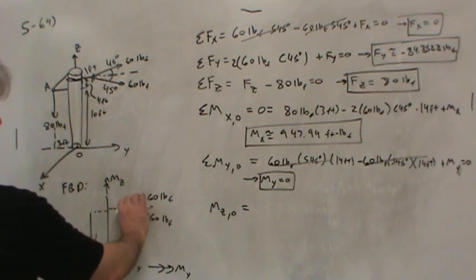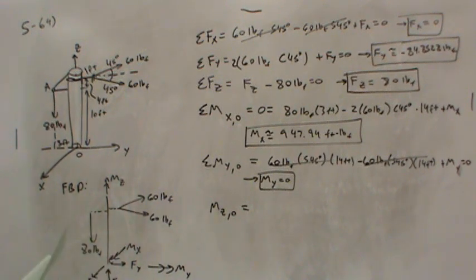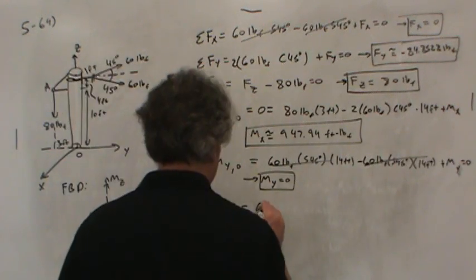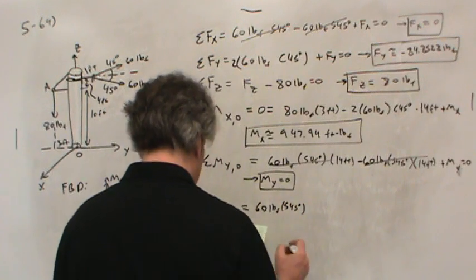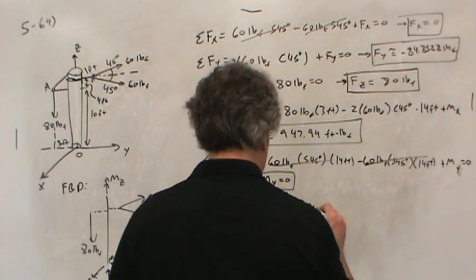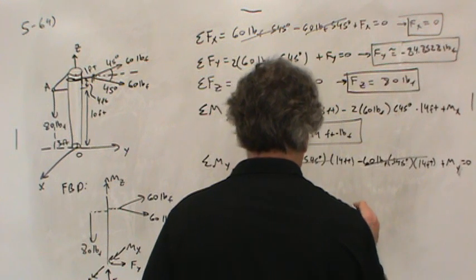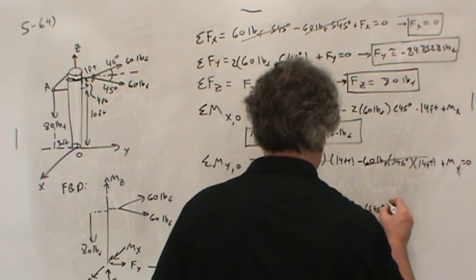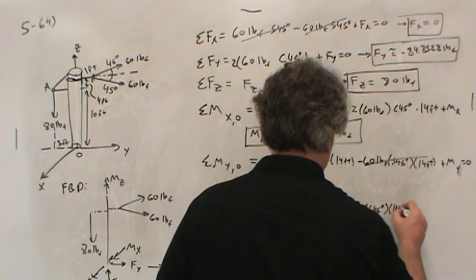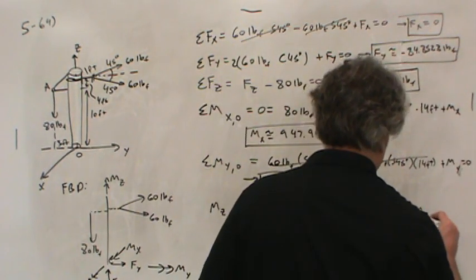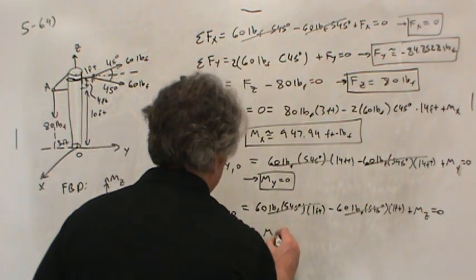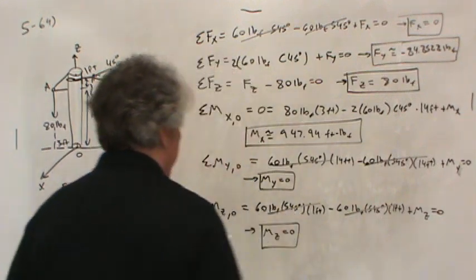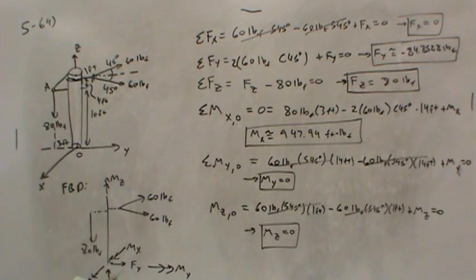So, we could write it like this. 60 pounds multiplied by sine of 45 degrees times one foot minus 60 pounds times sine 45 degrees times one foot plus the moment about the z-axis equals zero. And what this proves, the same thing as the last equation, is that the moment about the z-axis equals zero. So, there's no twisting from the ground onto the pole base.